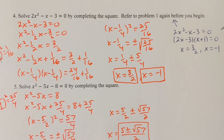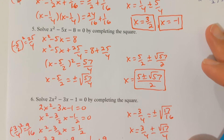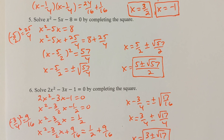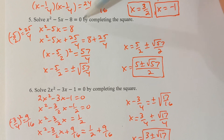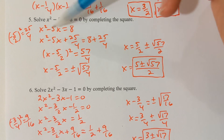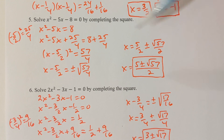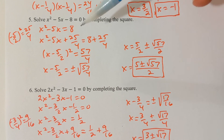Why we complete the square is not for situations where we can easily factor. It's for situations where we can't see the factors easily. Let's take a look at problem 5. I want to solve x² - 5x - 8 = 0 by using completing the square. This equation will not factor nicely for us, so my only option is to use the completing the square process.